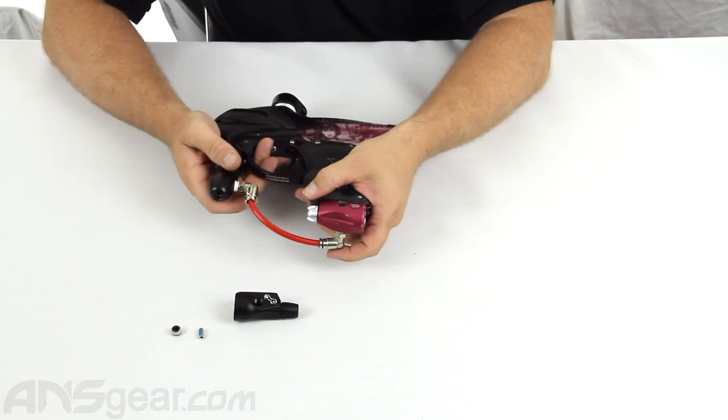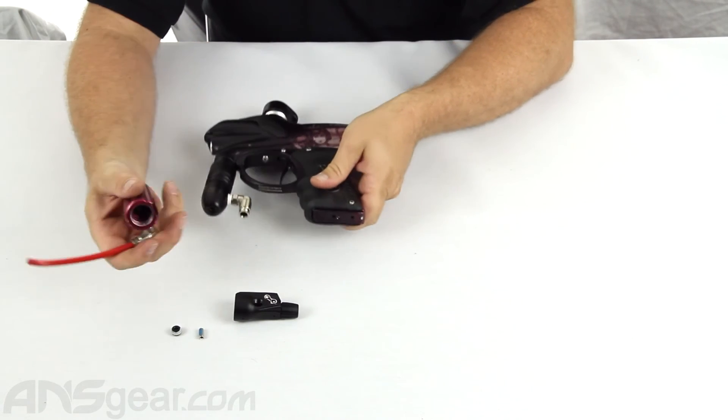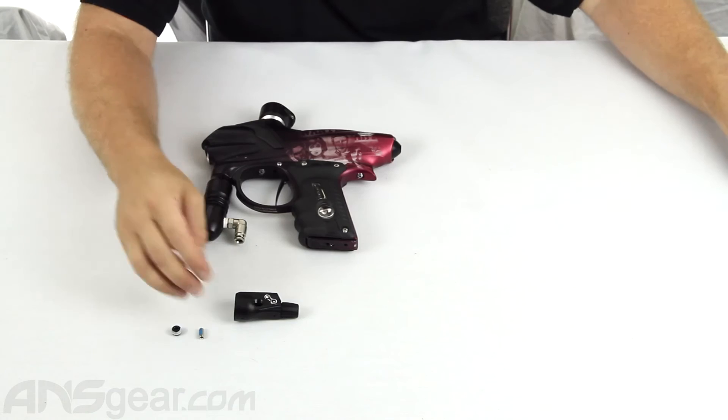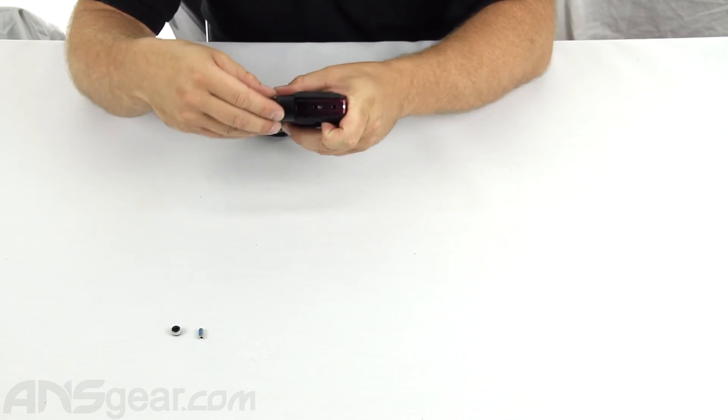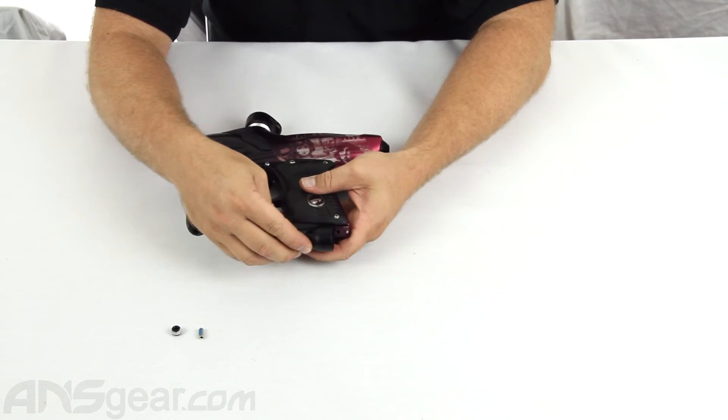Now I've got this gun here. I've already disconnected the ASA so we can slide this one off. 3/8 inch dovetail mount. So this one should just slide right on here. You can see that it does.